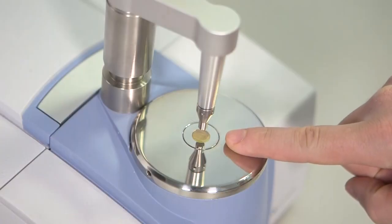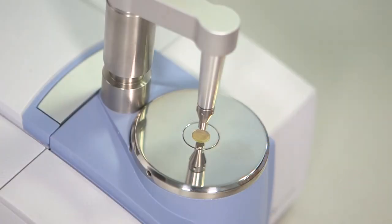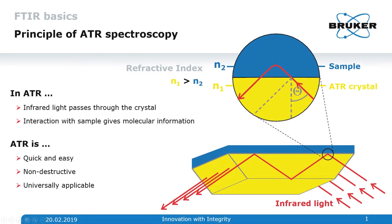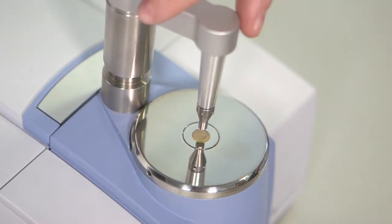This yellow zinc-selenite crystal is where the measurement takes place. Infrared light passes through the crystal and interacts with the material on top, providing molecular information. This method is fast and easy, non-destructive, and universally applicable.